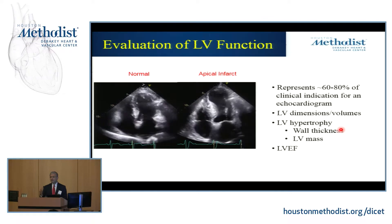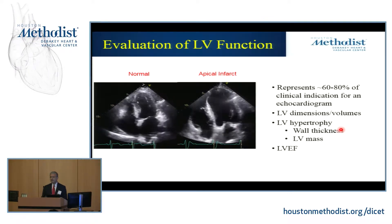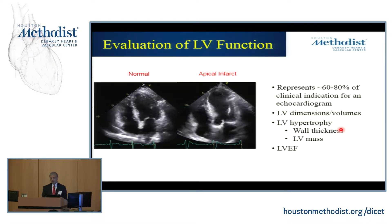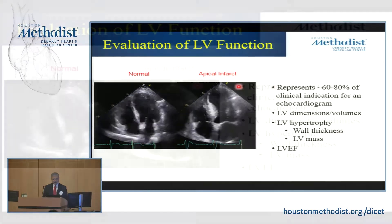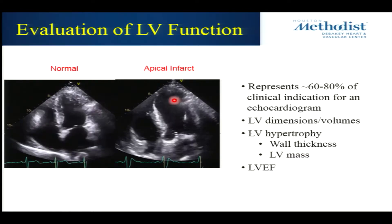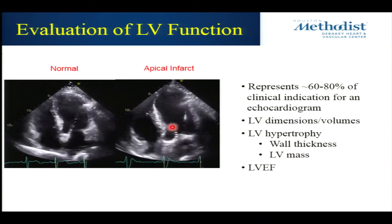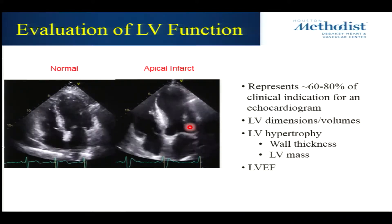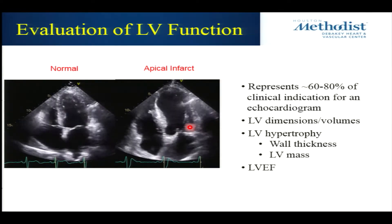LV function — left ventricular function — evaluation of somebody with a previous myocardial infarction, yes or no. What is the systolic function, ejection fraction? This is the technology used as first line, always, wherever you are in the world. This is an example of an apical infarct. You can see it very nicely here — this apex of the heart, as opposed to a normal area, is not functioning well, is not thickening. The property of the heart is to thicken and relax — contract and relax for every beat.